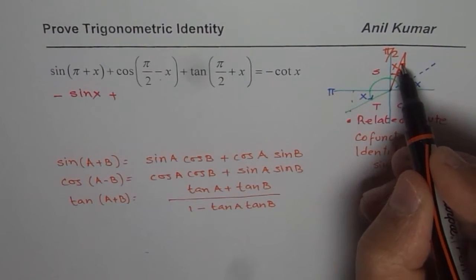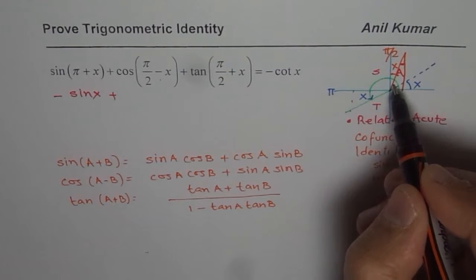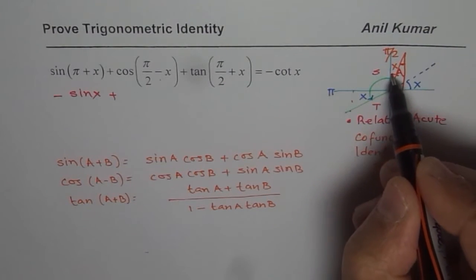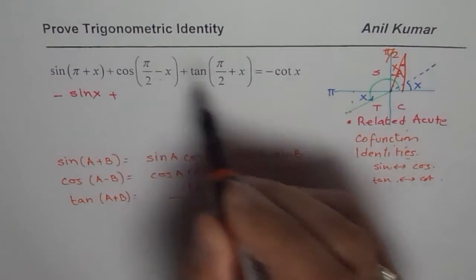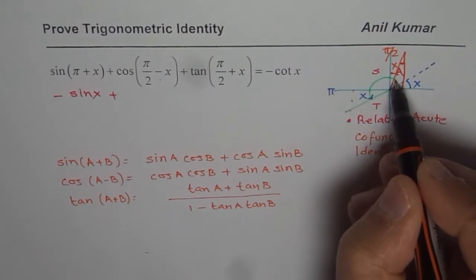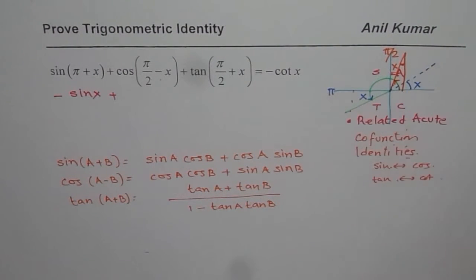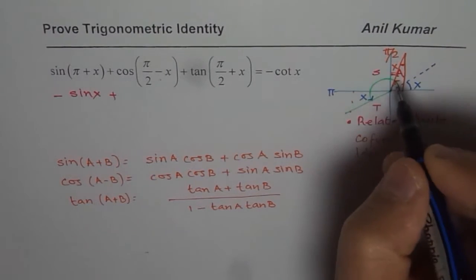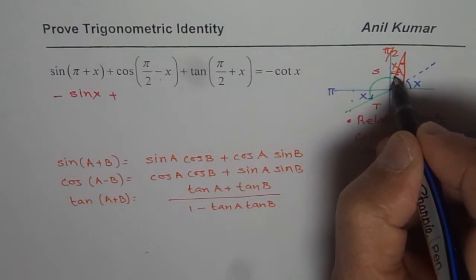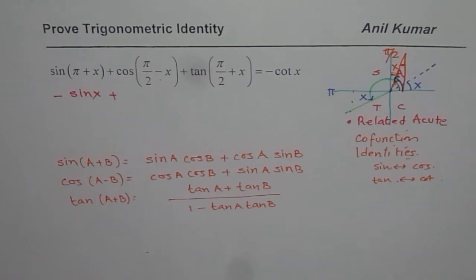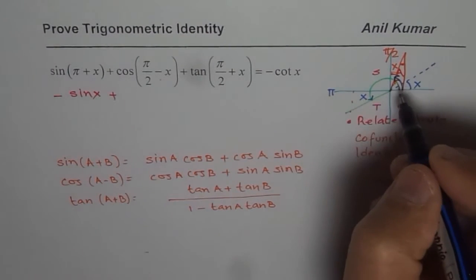Now, if I see, then this angle will be, so the whole angle we are talking about is pi by 2 minus x. So, we are actually talking about this angle. Do you see that? Pi by 2 minus x will be the angle from here to here. That is pi by 2 minus x. Is that okay? Now, from here, we know, we are in quadrant 1.